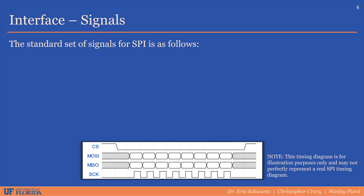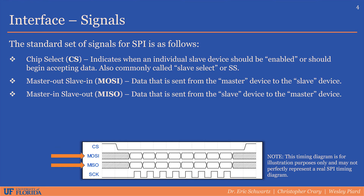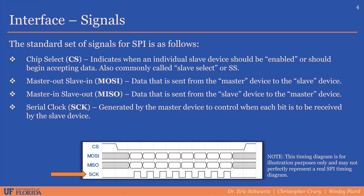There is a de facto standard set of signals used by SPI. The chip select enables or selects a slave device, indicating that it should begin the data transmission process. It is also commonly referred to as slave select. There exist two data transmission signals, MOSI and MISO, which allow data to be transferred bit by bit between the master and a slave device. The MOSI line carries data from master to slave, and MISO carries data from slave to master. Lastly, the serial clock signal is generated by the master device; it controls when each data bit is transmitted and received, and sets the data transmission rate.